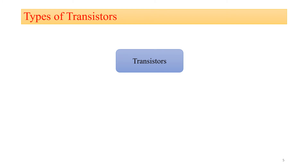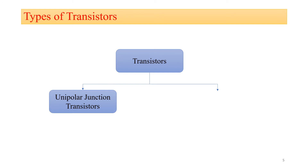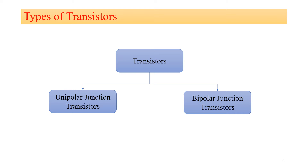Which are the different types of transistors? Transistors are classified into two types. The first type is the unipolar junction transistor — where conduction takes place due to only one type of carrier, that is majority carriers, either electrons or holes only. The best example is the FET, that is field effect transistor. The second type is the bipolar junction transistor, BJT, where conduction takes place due to both electrons as well as holes.